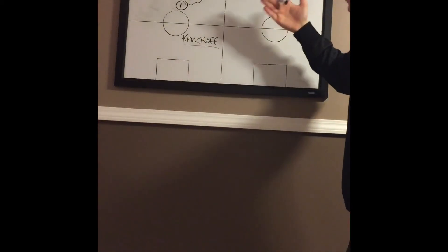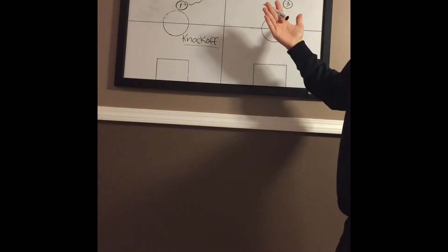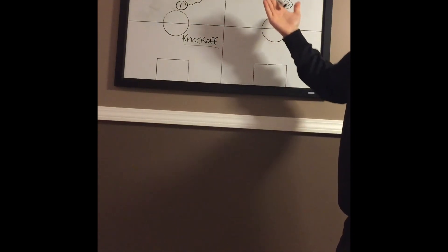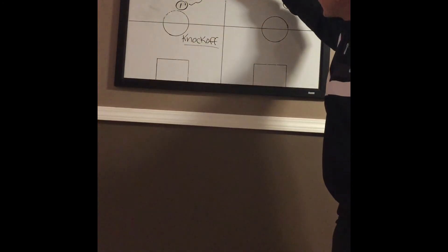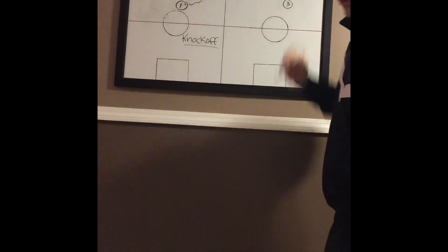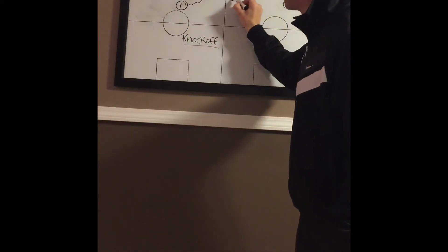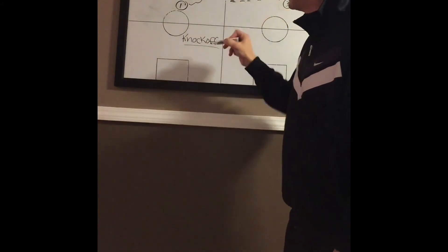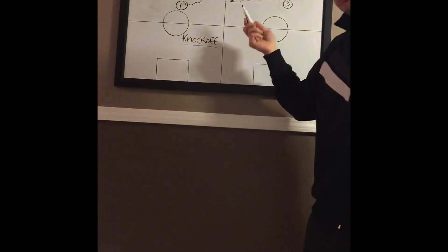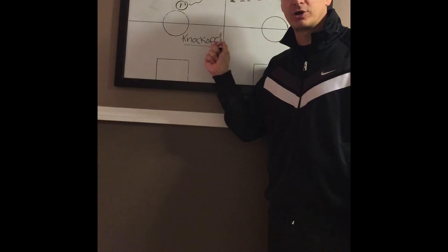X4 is now either going to bump the curl cut or possibly extend the screen if two doesn't curl. What we ask two to do here is make a hard curl cut and actually set a screen on X4, knocking him off. Four pops back, three hits four, and now your stretch four should have a wide-open, clean look at a three-point shot.